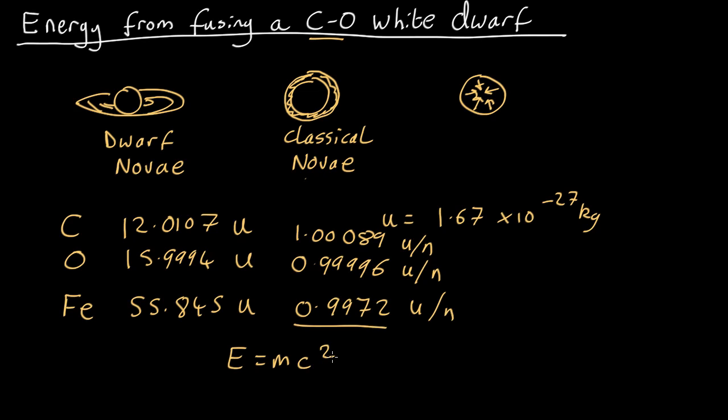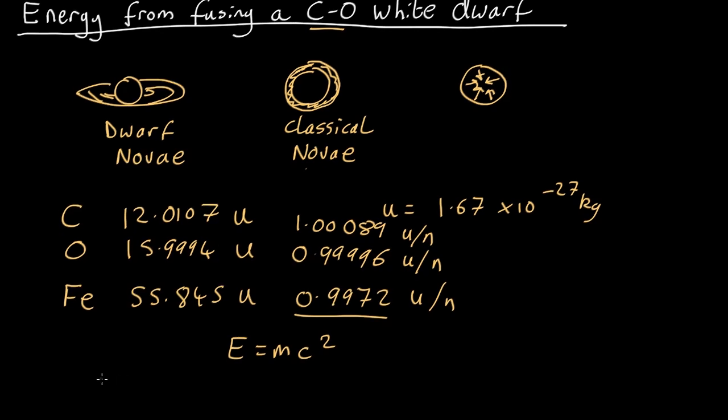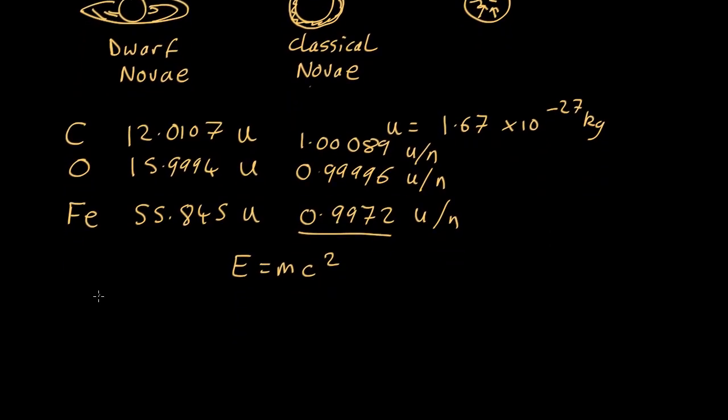So, if we take one nucleon in the form of, say, carbon, and convert it into iron, so that same nucleon ends up in iron, we can look at how big the mass difference is. Let's just take carbon to iron. We could take oxygen to iron and get very similar answers.